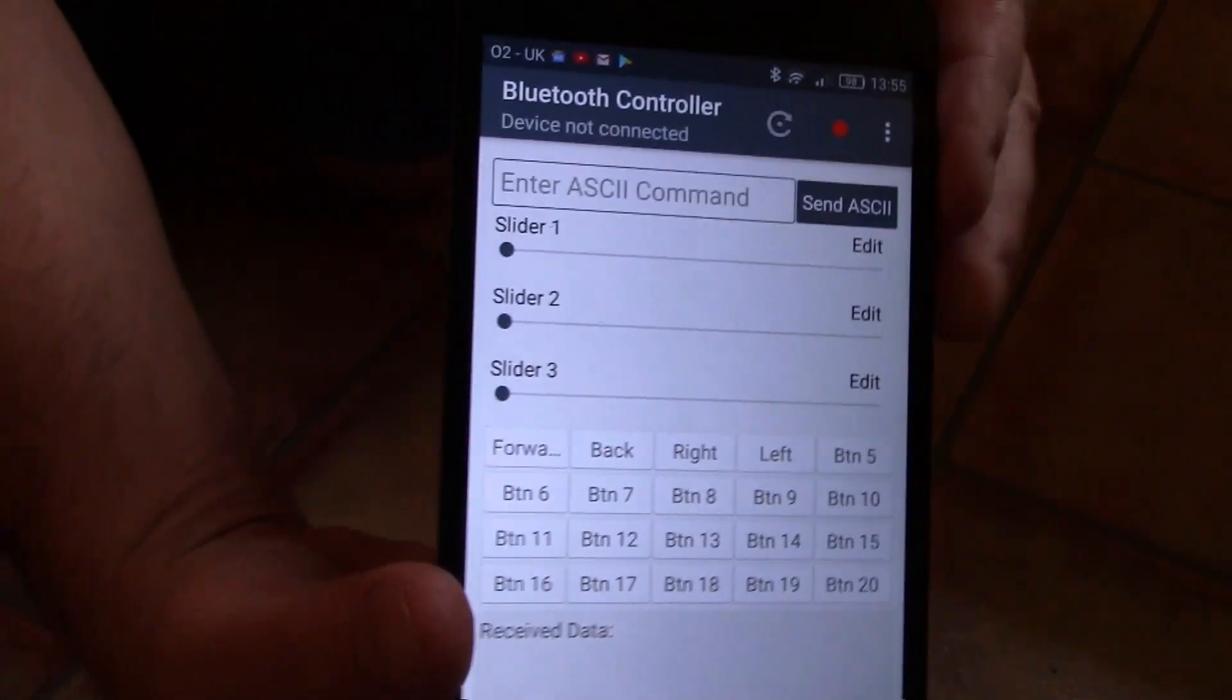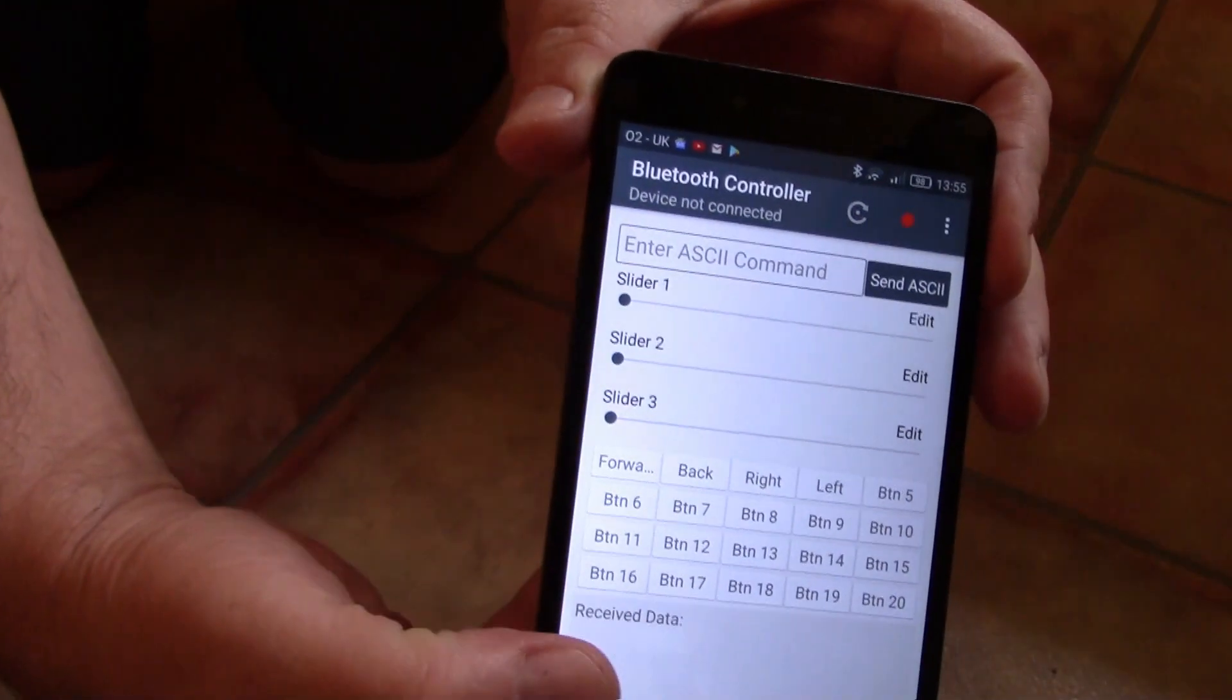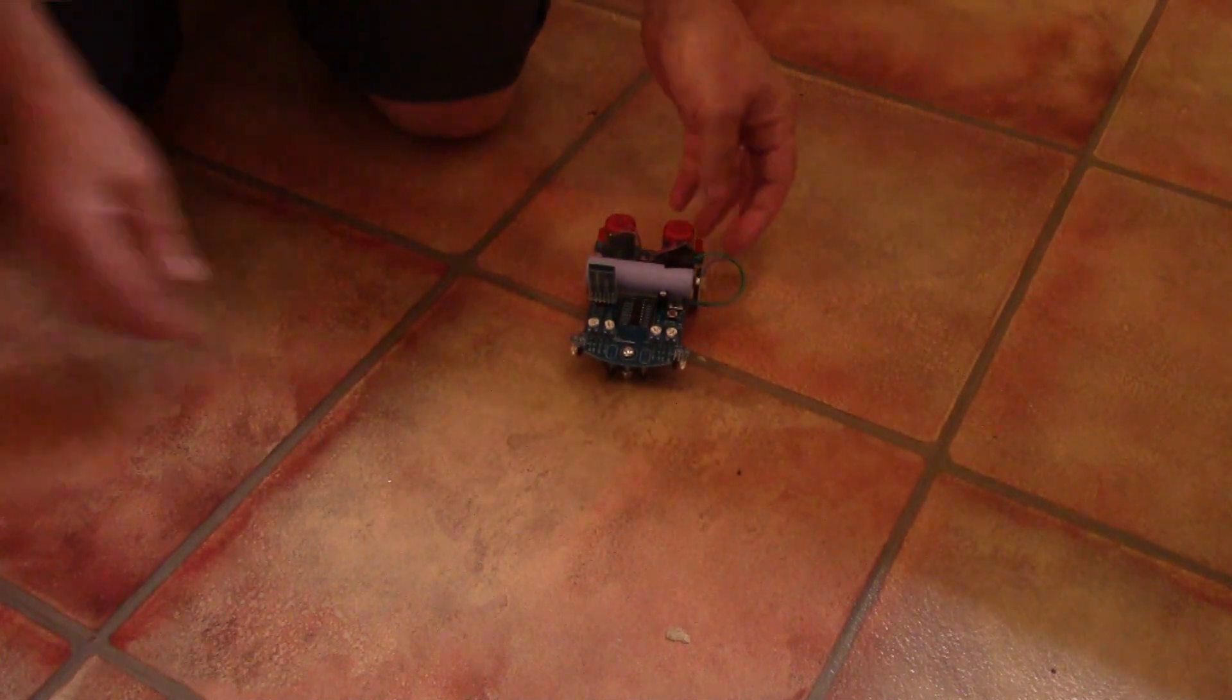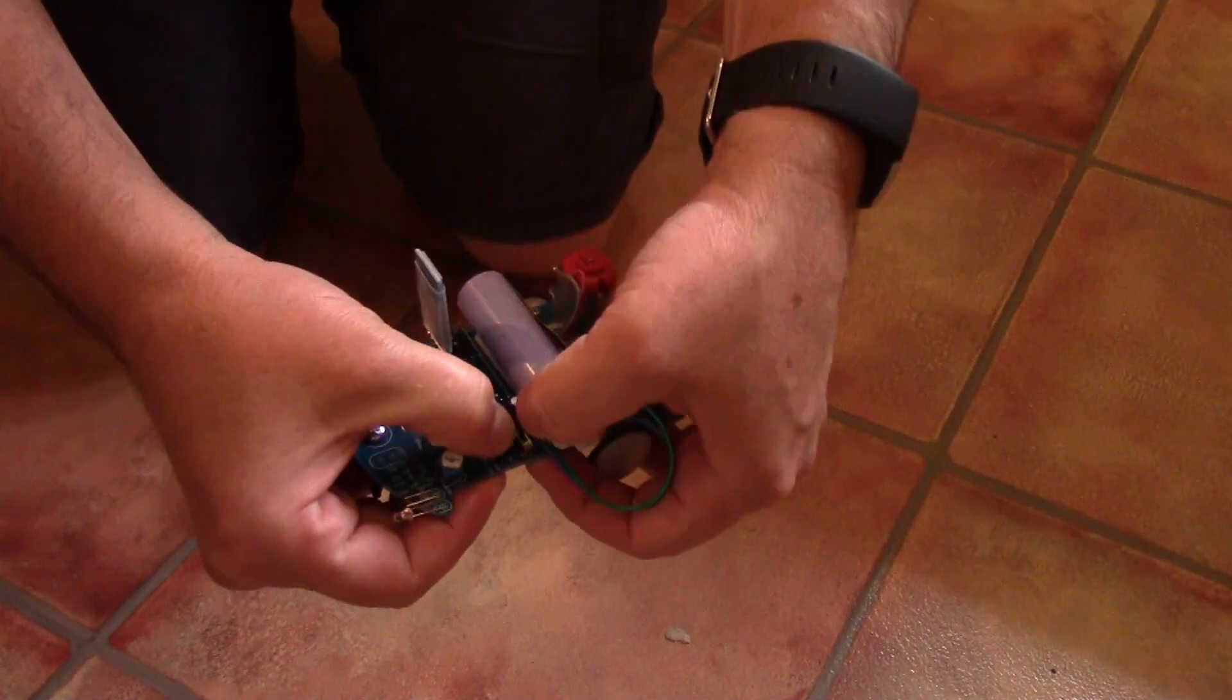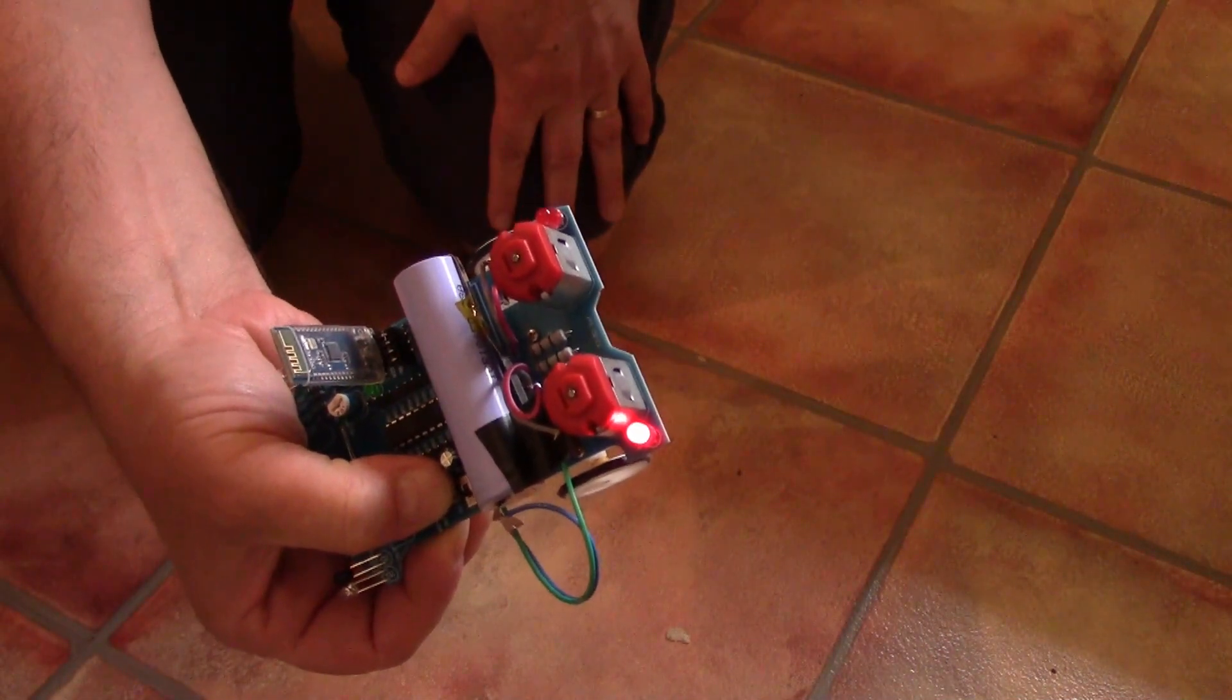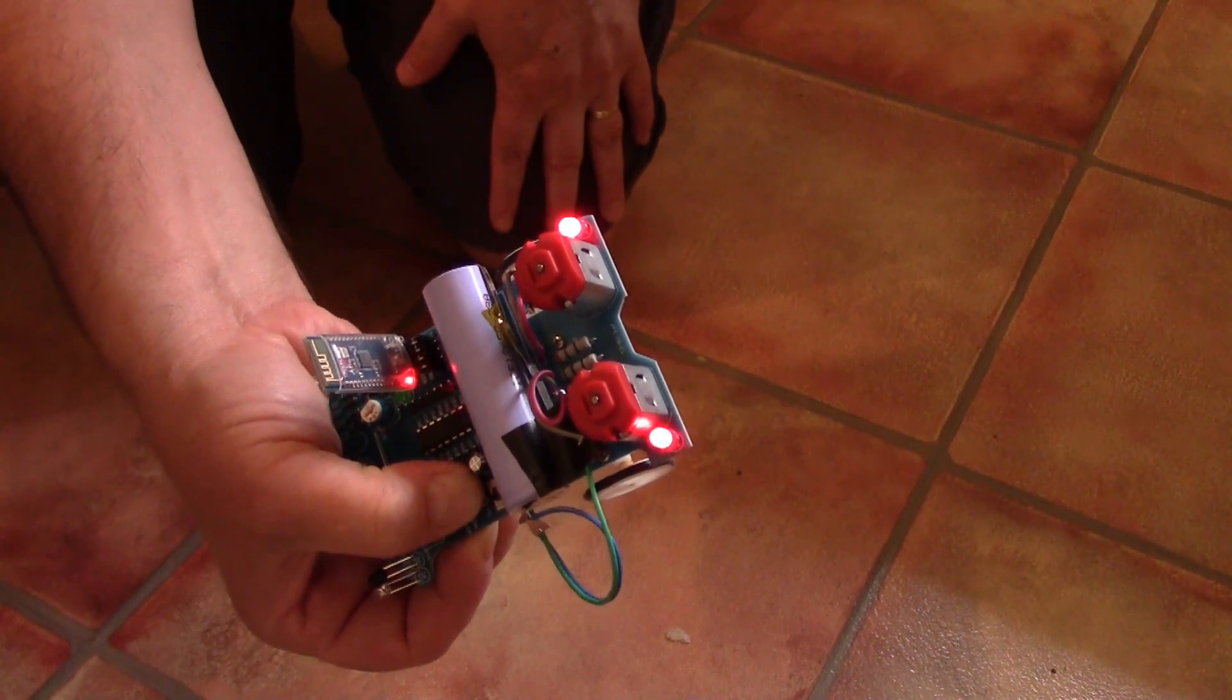I'm going to be using this to control it. I've configured four buttons here to do right, left, backwards, and forwards. The first step is to get it into Bluetooth mode. If you remember, we hold down the button, we switch it on, and we see mode one, mode two, mode three indicated by the LEDs. That should now be in proper Bluetooth mode, so I'll start my app.